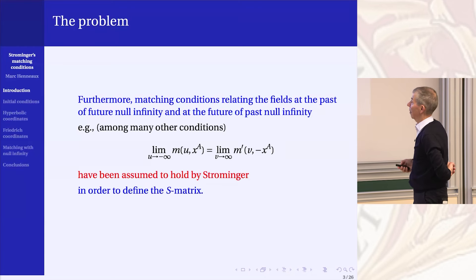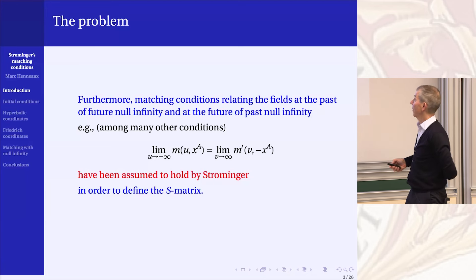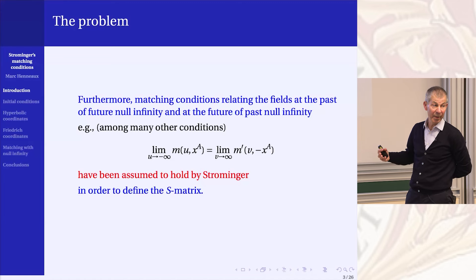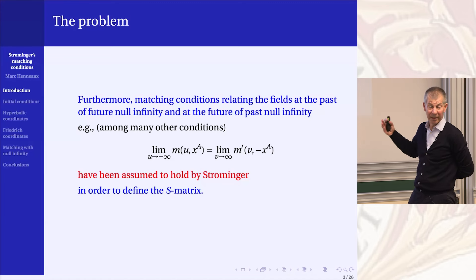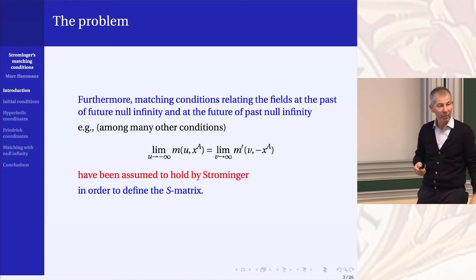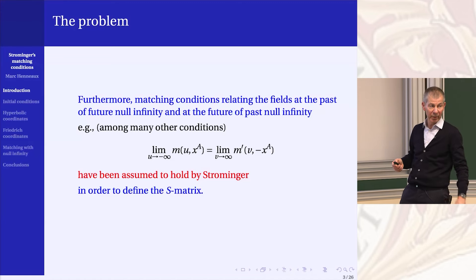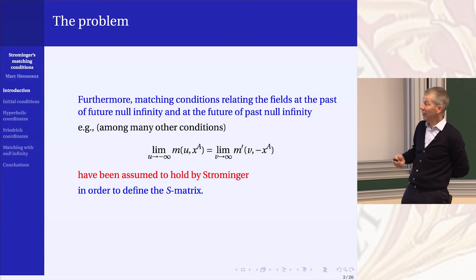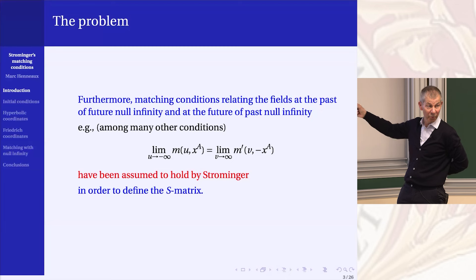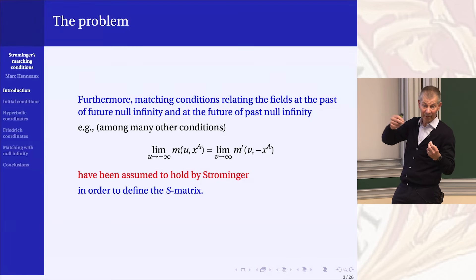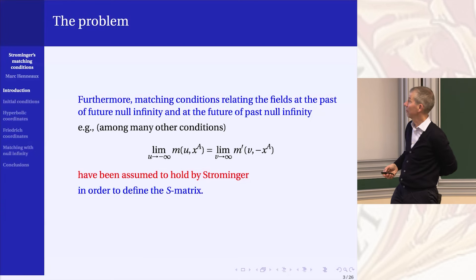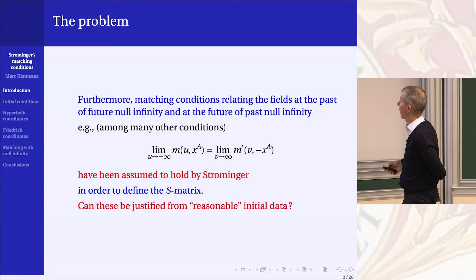These are typically one type of matching conditions. One assumes that the past limit of the function m, which is a boundary mass appearing at future null infinity, is equal to the future limit of the boundary mass appearing at past null infinity. Similar connections are made between other coefficients in the metric. Why is it x and minus x? It involves an antipodal match. It's because you are going through the origin. So you have to match things with minus x — the matching conditions involve the antipodal map.